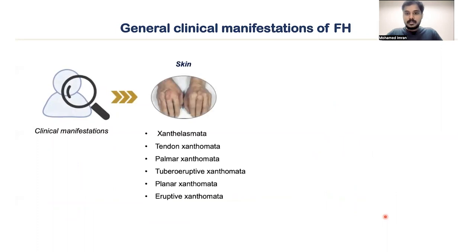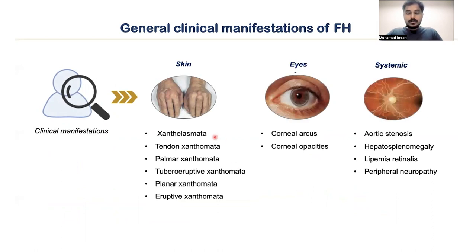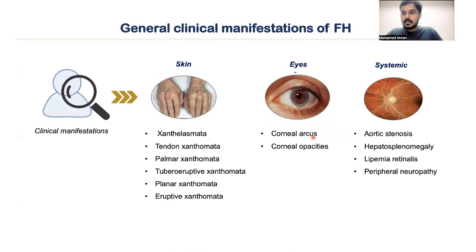These are some general clinical manifestations of familial hypercholesterolemia, seen in the skin, eyes, and other systemic organs. In the skin, cholesterol deposits are seen as nodules — this is known as xanthoma. If the nodule is present in the tendons of the knees or fingers, it is known as tendon xanthoma; if in the palm region, it is palmer xanthoma. In the eyes, cholesterol deposits can be seen around the cornea as a white ring, known as corneal arcus. In other systemic organs, cholesterol can be deposited in the retinal veins, known as lipemia retinalis.